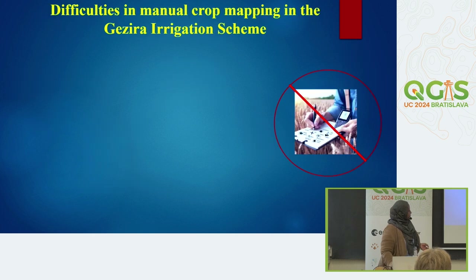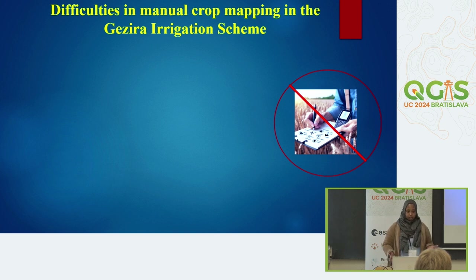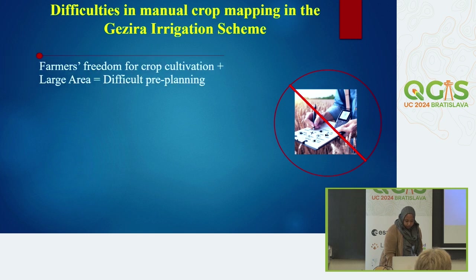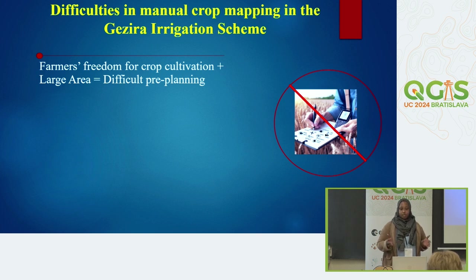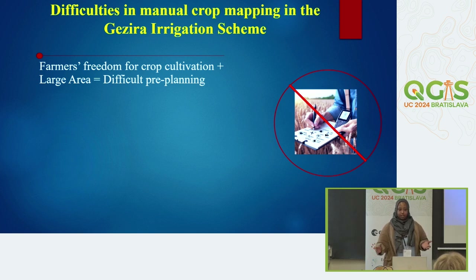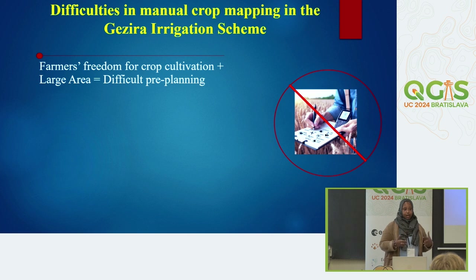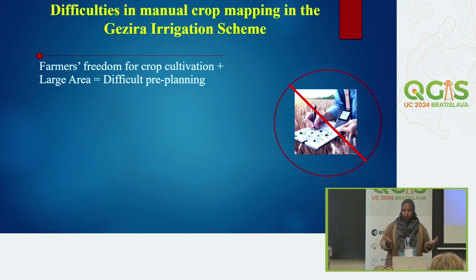There are difficulties in manual crop mapping, especially in such large areas. Farmers are given the freedom to cultivate their crop of choice, and some farmers even tend to change their mind within the last month and prepare their land differently for a different crop. That makes it really difficult for higher authorities to pre-plan — they know the group of crops to choose from, but don't know exactly the combination of crops in the field.